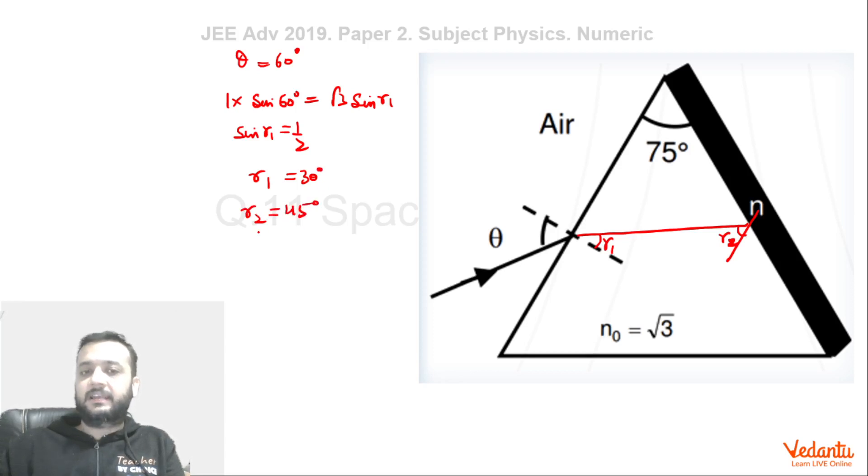Now since this is critical angle, we can apply Snell's law. So root 3 into sine R2, sine R2 means 1 by root 2, will be equals to N into sine 90. Right. So from here we get N equals to root of 3 by 2.